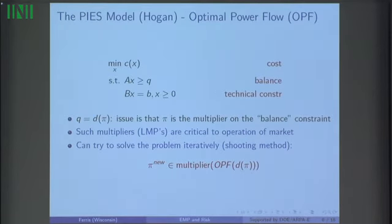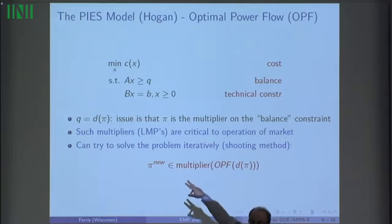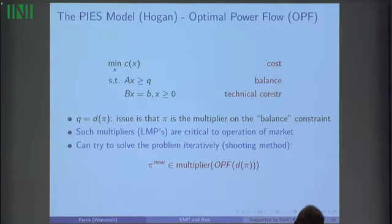So let's go back to Hogan. Hogan was talking about optimal power flow. In optimal power flow, the optimization problem that he had was minimize some quadratic or linear cost, subject to AX supply is greater than or equal to Q demand. Supply is bigger than or equal to demand. And then some technical constraints which define the energy sector or your physical system, and I put all of those in BX equal to B. Linear programming problem. But then Hogan noticed that this quantity Q was not actually a quantity, but it was a representation of demand. So demand is a function of price. As the price goes up, the demand goes down.